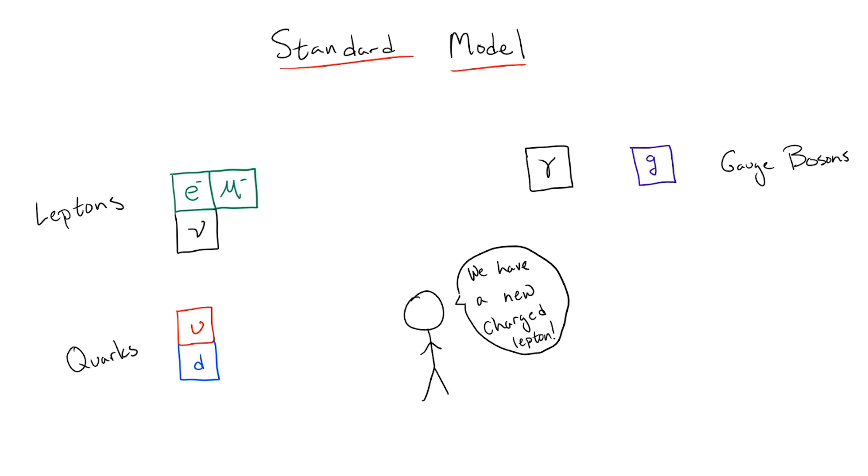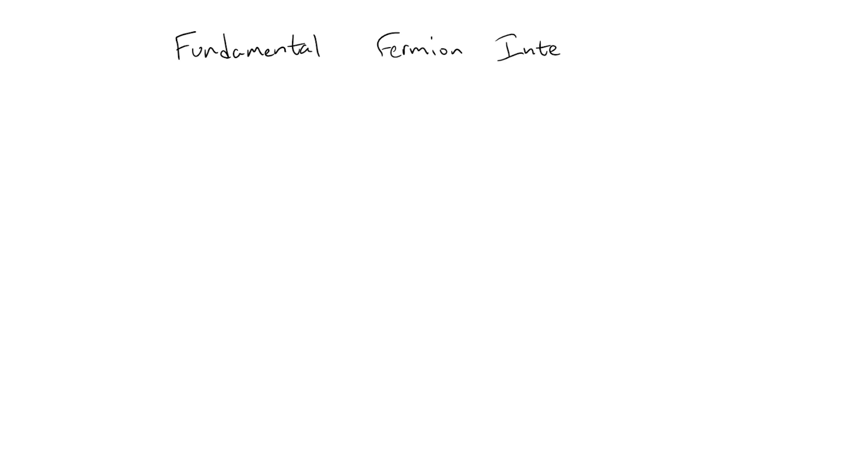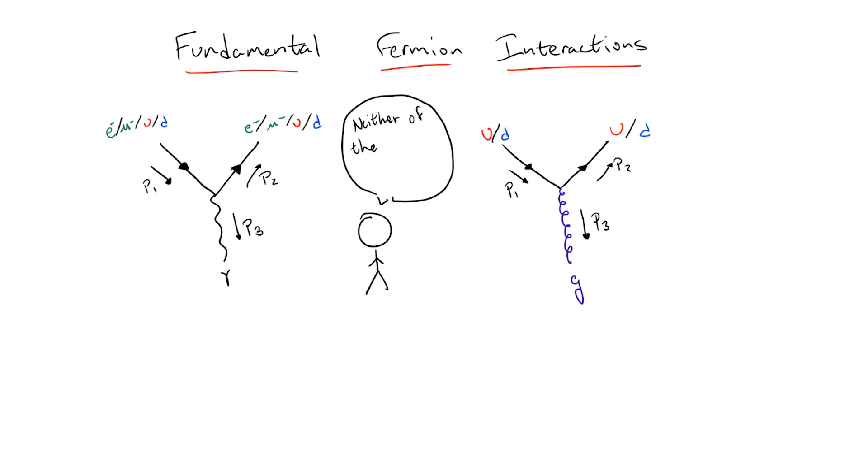So now, we not only added in a new particle in the form of the muon, but we also see that we need a way to include these decays into the standard model, preferably in a way which can be useful in our usual perturbative expansion using Feynman diagrams. However, the issue is that just with the interactions we have introduced so far with QED and QCD, unless we have particle-antiparticle annihilations, we have no way of transforming one type of particle into a different type.